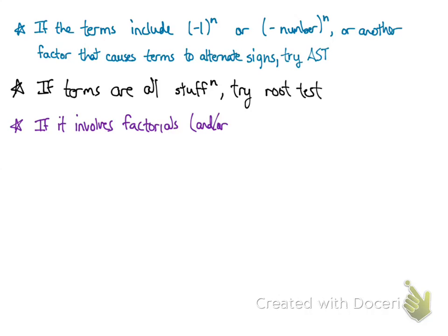If the terms of your series involve factorials, and also maybe nth powers, or n squared powers, or things like this, you can try the ratio test. And the ratio test is actually, I think, more useful than the root test in general. Often they'll both work, but sometimes only the ratio test will work. Occasionally only the root test will work, but I think the ratio test works more often.